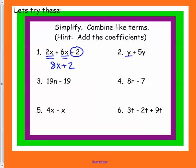In number 2, we have 1y and 5y's, so we have 6y's. In number 3, there is nothing we can do because the n is not the same as having no n over here. Same thing with number 4. The 8r and the negative 7 cannot be combined.